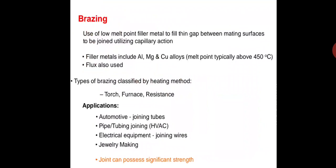Brazing uses a low-melting-point filler metal to fill the gap between the mating surfaces to be joined, utilizing capillary action. Filler metals include aluminum, magnesium, and copper alloys, where the melting point is typically above 450°C. Flux is also used. Types of brazing are classified by heating method: torch, furnace, and resistance heating. Common applications include automotive joining of tubes, pipe and tube joints, electrical equipment, joining of wires, and jewelry making.